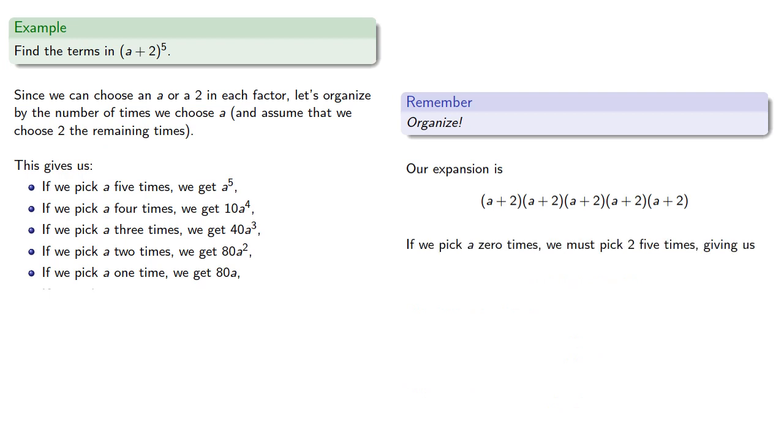And finally, we can pick a zero times, in which case we must pick 2 five times, giving us 32. This appears 5 choose 0, one time.